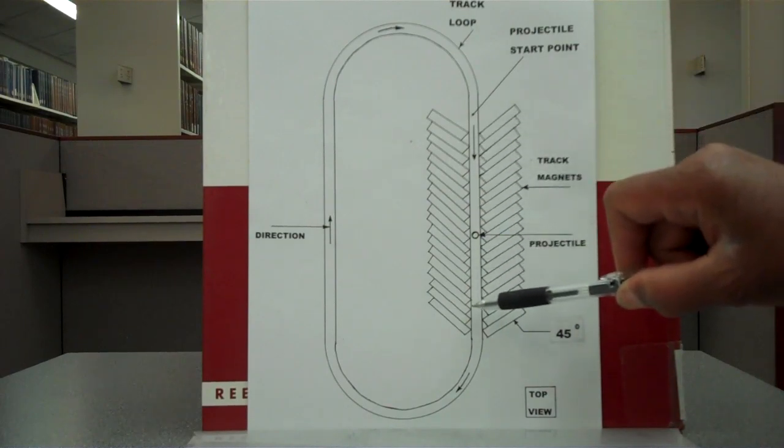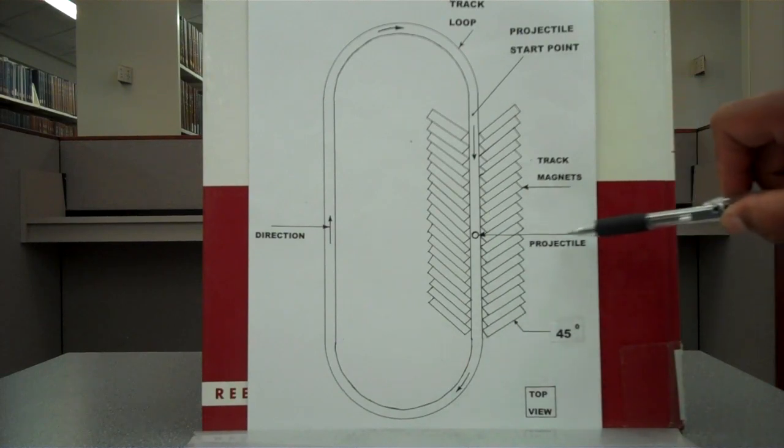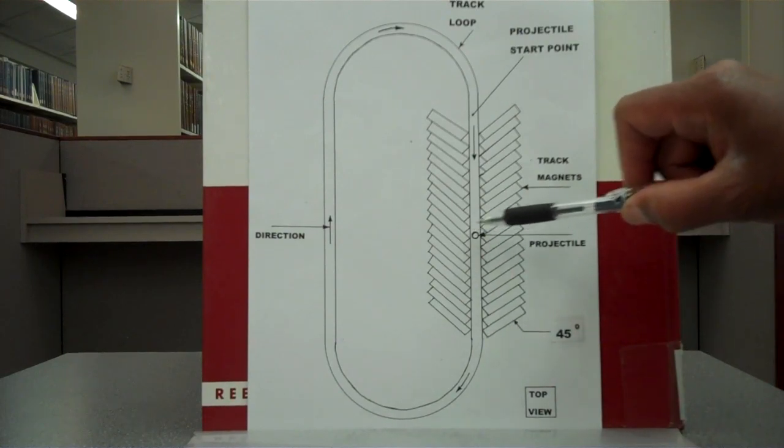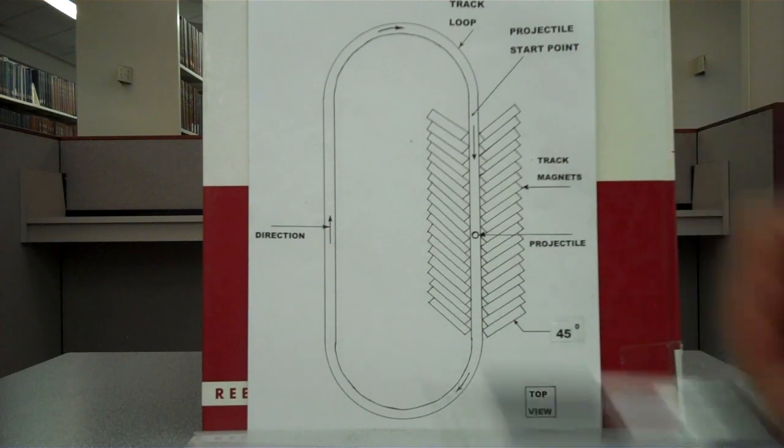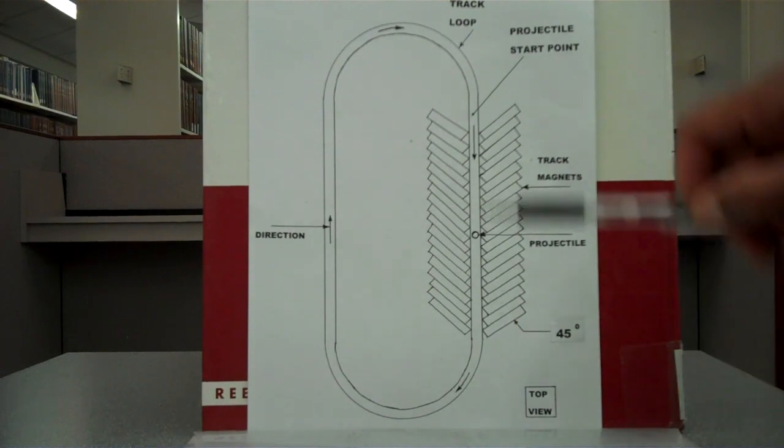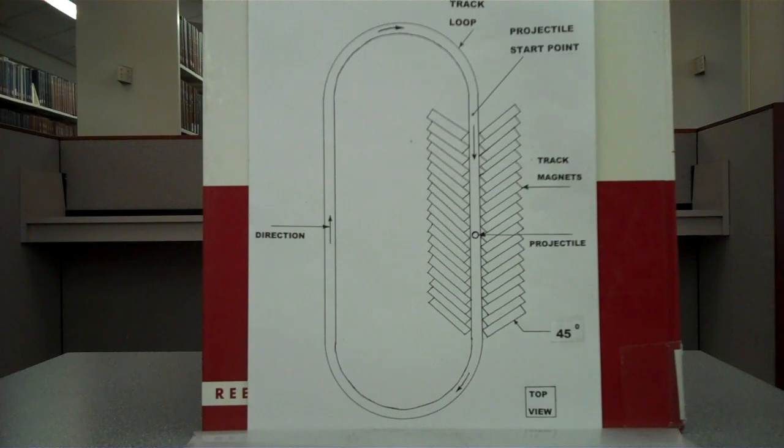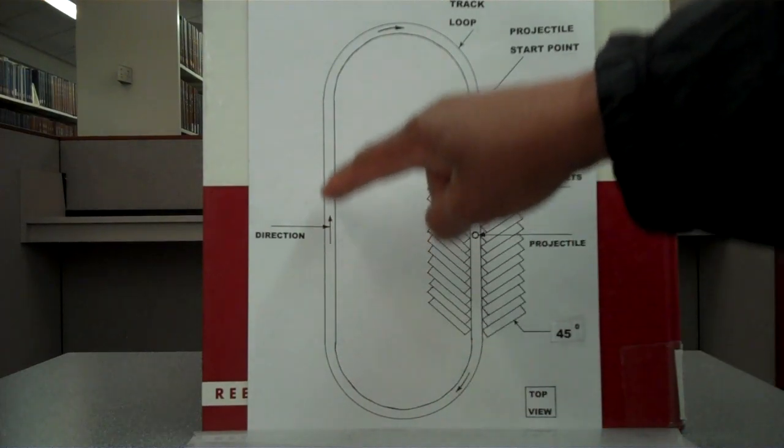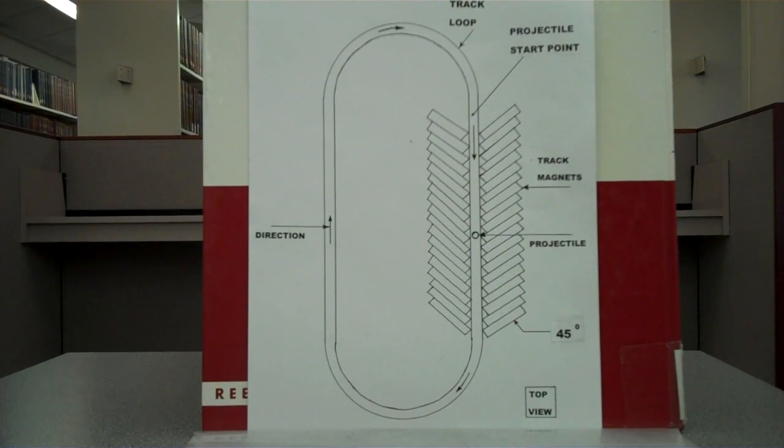The linear accelerator forces the projectile by momentum. The projectile can be a ball magnet or a rectangular magnet that goes all the way around. In both cases, you must remove all friction off the track to let the projectile go around and around.